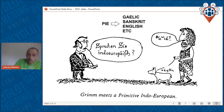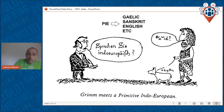Proto-Indo-European has evolved into a number of languages — for example, Gaelic, Sanskrit, English, and so on. There are two main models for the origins of Indo-European languages and I'll be talking about both of them.